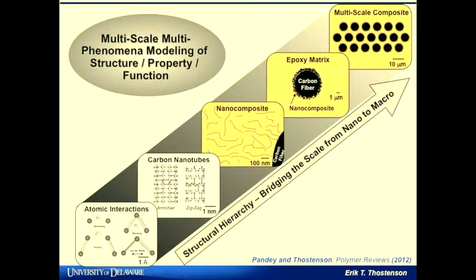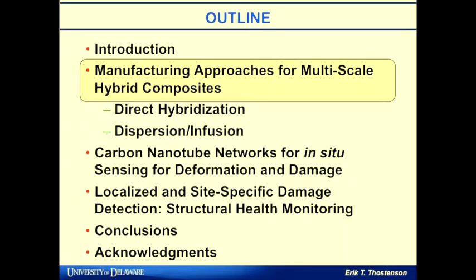There is a lot of physical phenomena very different at the nanoscale, so we often have to take into account atomic interactions. The manufacturing approaches we've been looking at include direct hybridization, where we take nanotubes and either grow them on the fibers or directly incorporate them into the fibers, followed by adding the resin. We've also been looking at a dispersion and infusion approach, where we disperse nanotubes in the polymer and infuse them into the fiber composite.